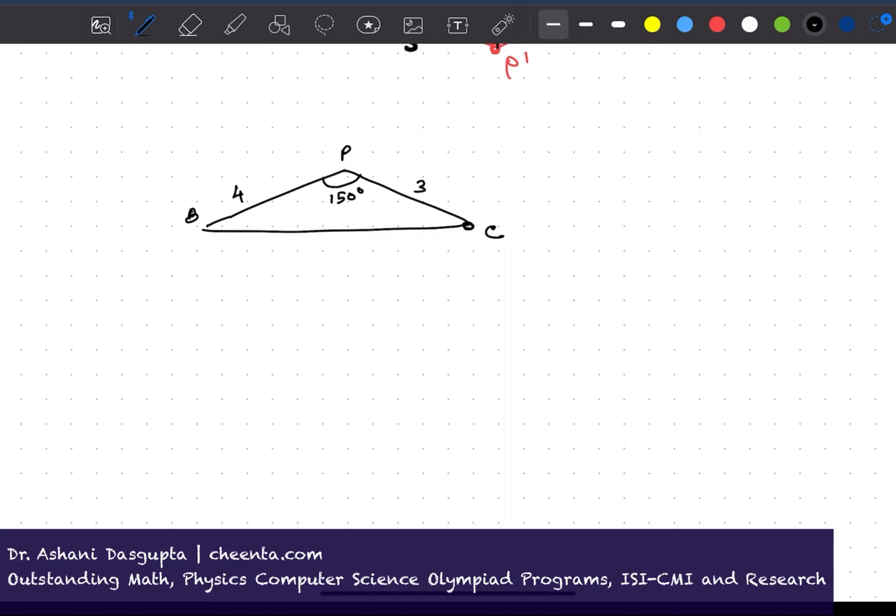Now, that's very doable. We can directly use the cosine rule from trigonometry, which says that PB square plus PC square minus 2 times PB times PC times cosine of 150 degrees is equal to BC square. So you can do the calculation. PB square is 16, PC square is 9, minus 2 times 12 times cosine of 150 degrees is BC square.